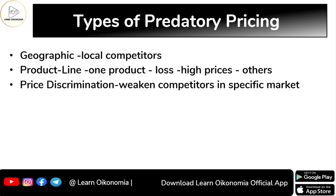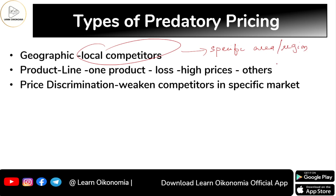Predatory pricing is of various types. The first is geographic predatory pricing, where price reduction happens only in a specific area or region. The predatory firm focuses on a particular region to eliminate all local competitors there — that is the main intention.